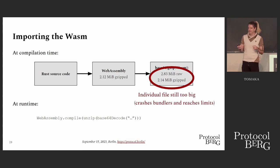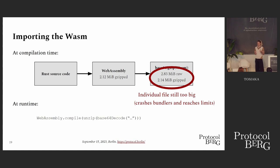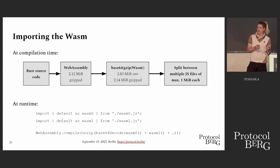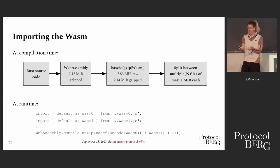The only problem is 2.14 megabytes is still too big for bundlers — they just crash, errors everywhere. Workaround number three: split the compressed base64 WebAssembly into multiple JavaScript files of one megabyte each, then recombine them at runtime. You decode, then decompress, then instantiate. That's the kind of stupidity you have to deal with when shipping WebAssembly in a browser.